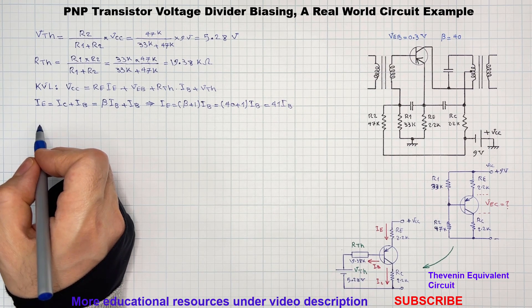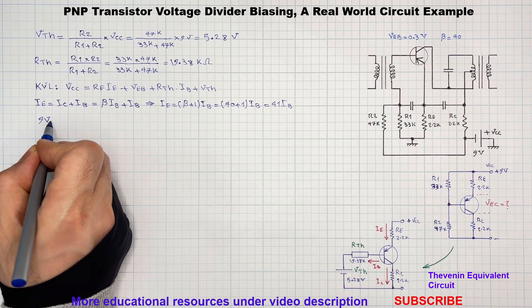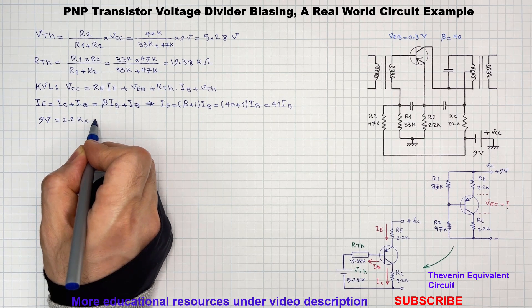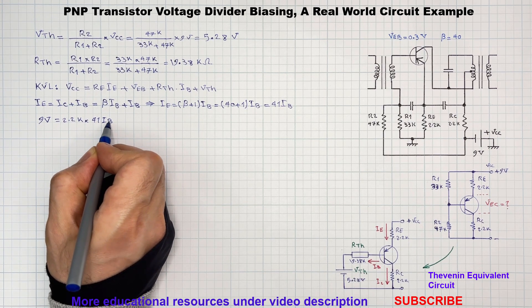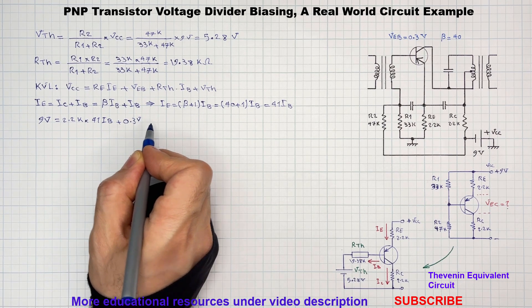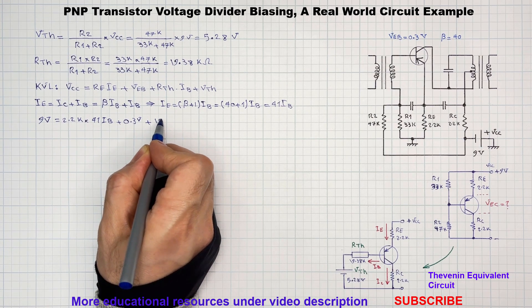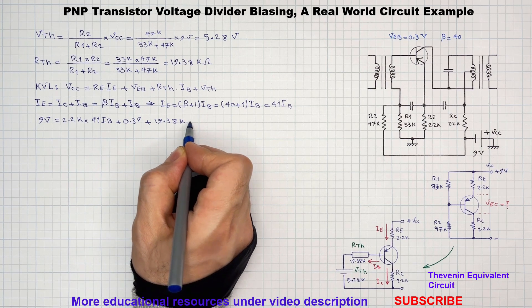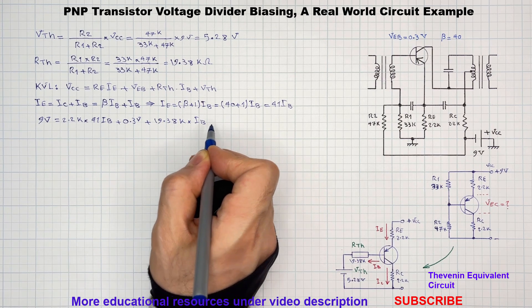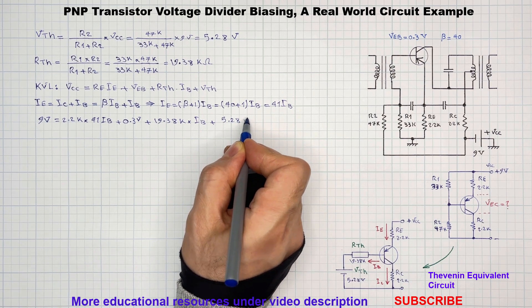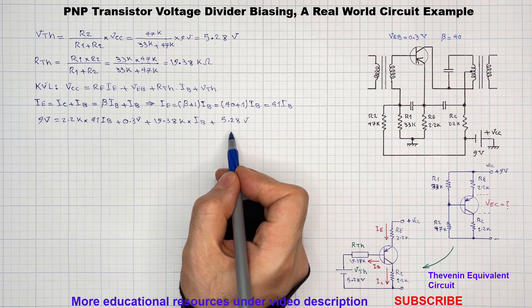By substituting the component values into the KVL equation we will get the expression, and we rearrange and solve this for the base current.